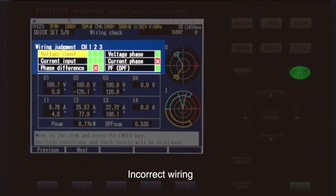Incorrect wiring is indicated in red. Yellow signals that you should double-check the wiring.